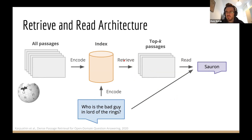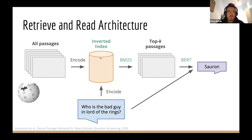This retrieval part is pretty similar to a search problem, but with one significant difference: you don't exactly search for similar questions, but for evidence containing the answer. So there are two distinct domains that are not exactly the same — for example, token overlap may not apply. In practice, you usually encode passages in an inverted index and use something like BM25 to extract passages. This is the typical algorithm from Elasticsearch — a kind of TF-IDF, bag-of-words approach.